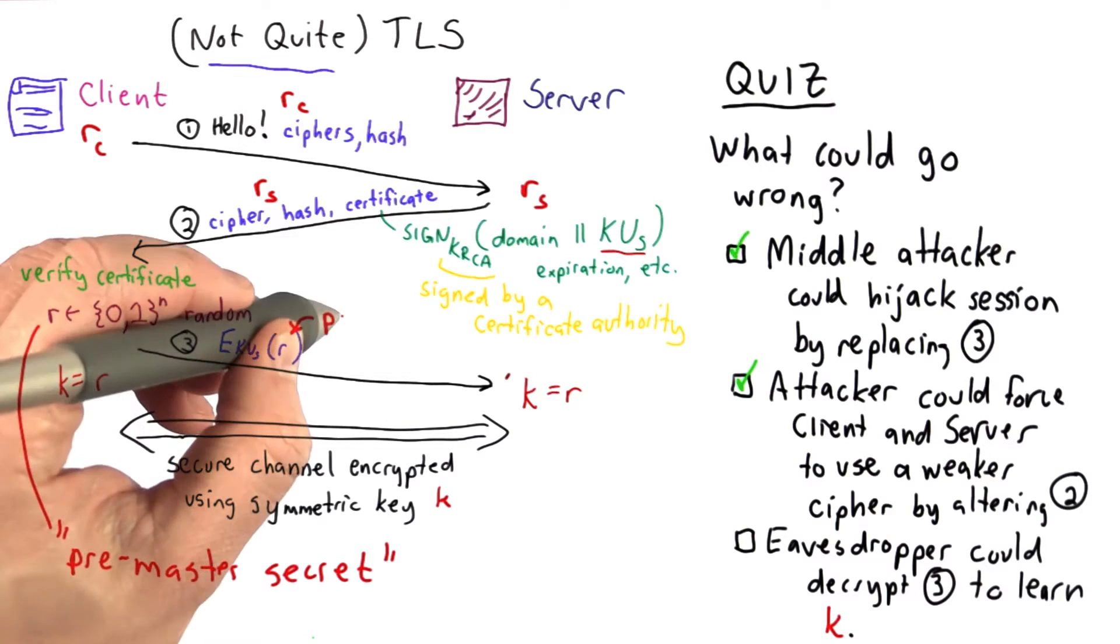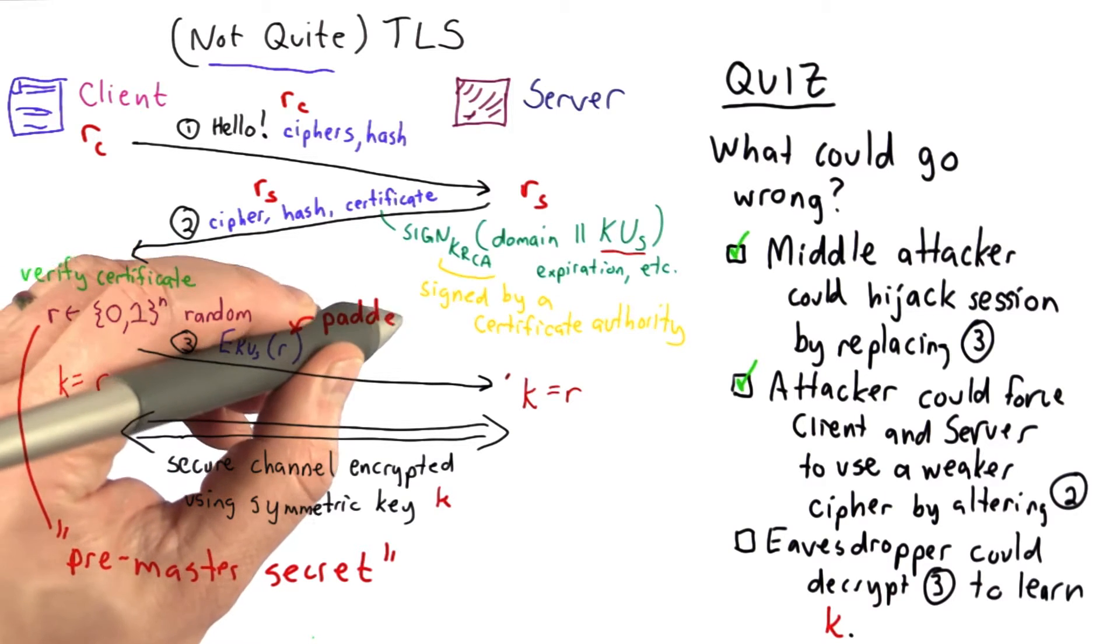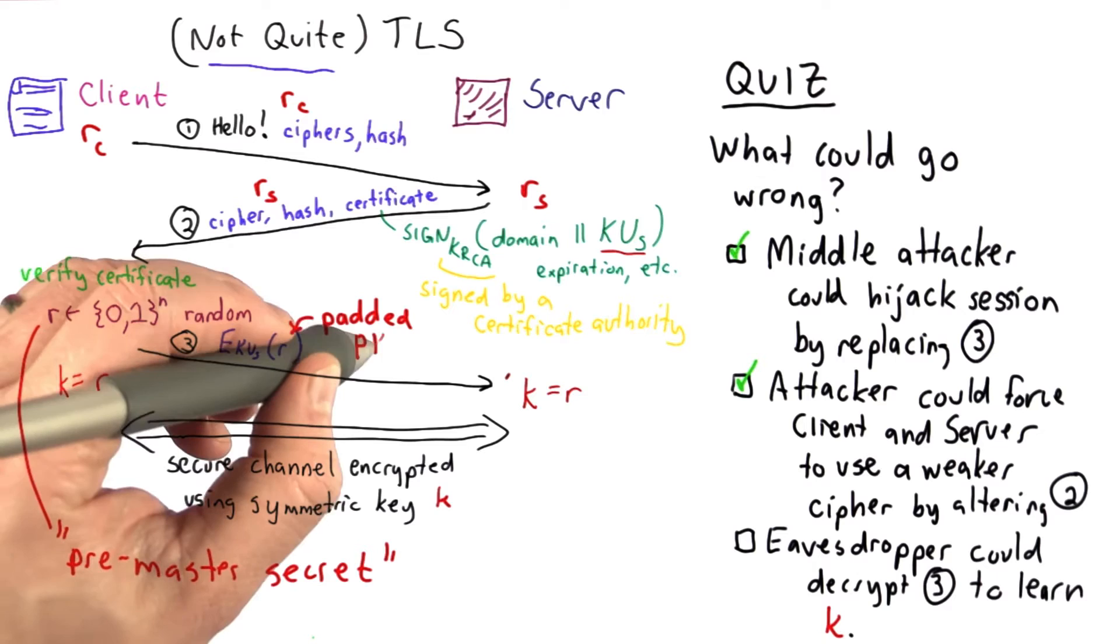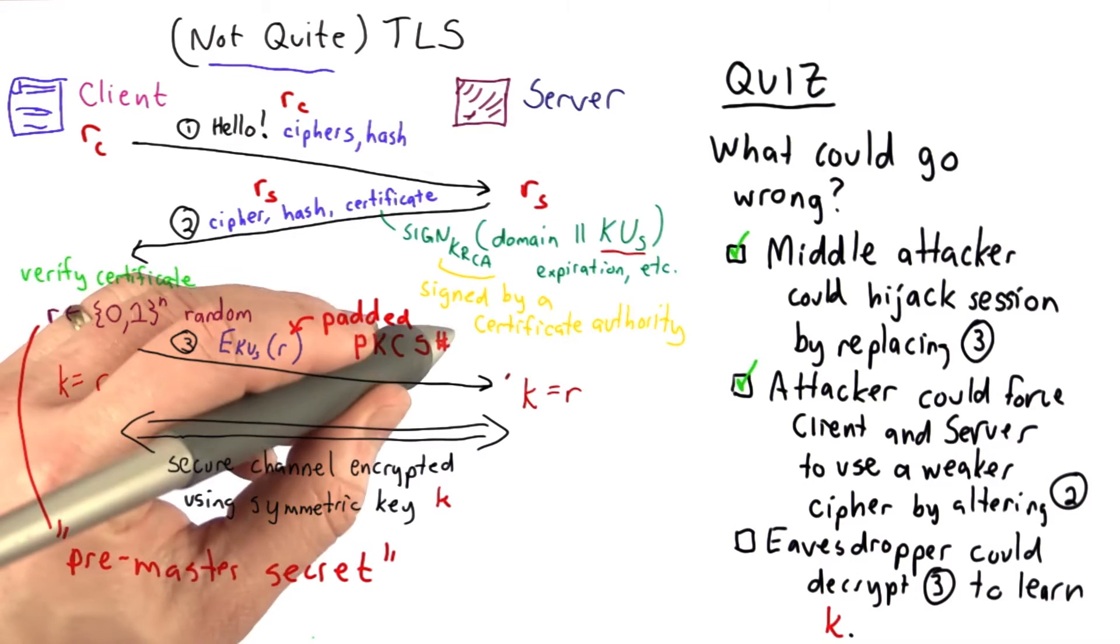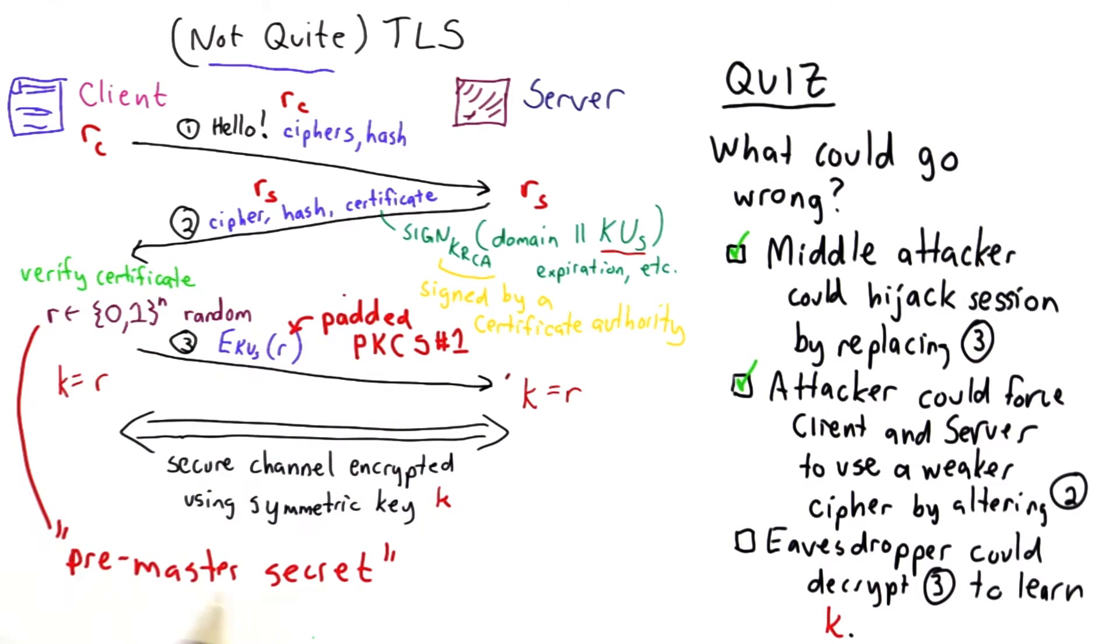We're going to pad this. This will make search attacks more difficult, prevent some of the weaknesses if this is a message that happens to be a small number. So we're going to use the PKCS protocol that we talked about in Unit 4 to use RSA more securely.